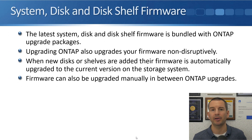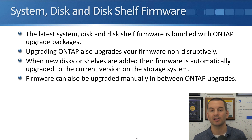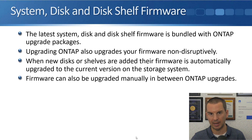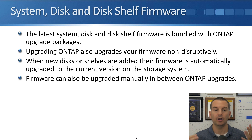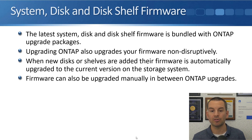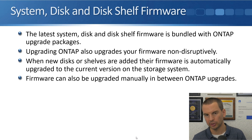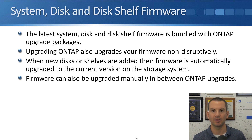The latest system, disk, and disk shelf firmware is bundled with the ONTAP upgrade packages. So when you download a new version of ONTAP it includes the firmware as well — all in one file. Upgrading ONTAP also upgrades your firmware non-disruptively at the same time. When new disks or shelves are then added, their firmware is automatically upgraded to the current version on the storage system. So if you buy a new disk and the firmware on it is older than what is on your system, it will be automatically updated when you add that disk.